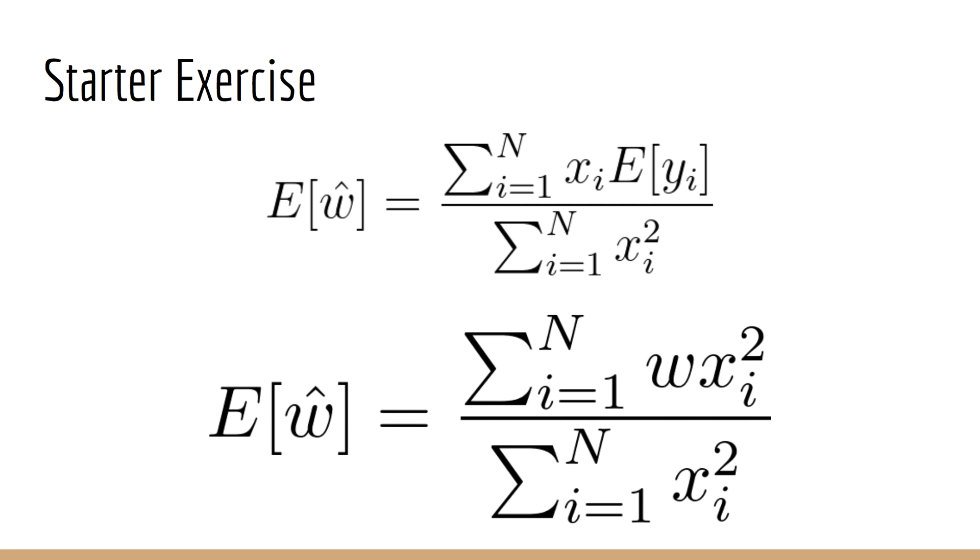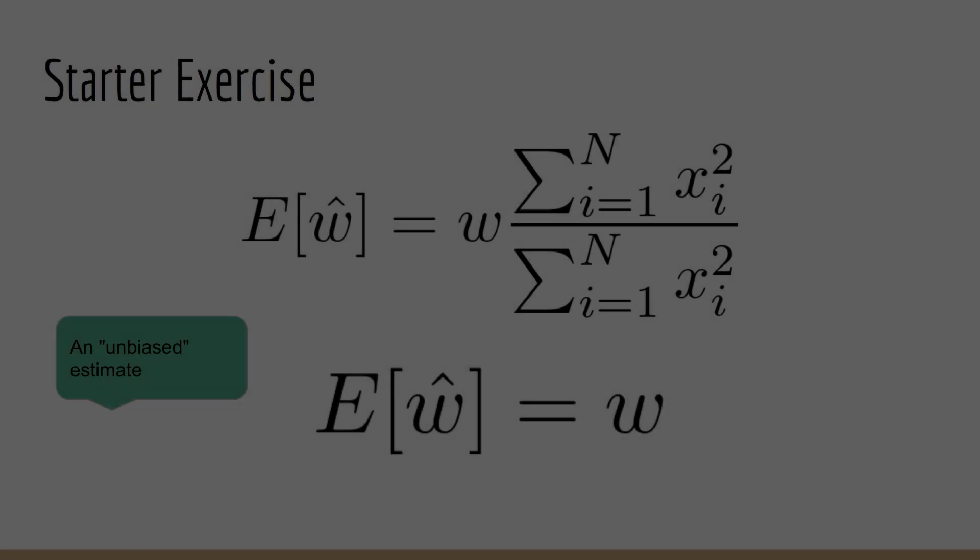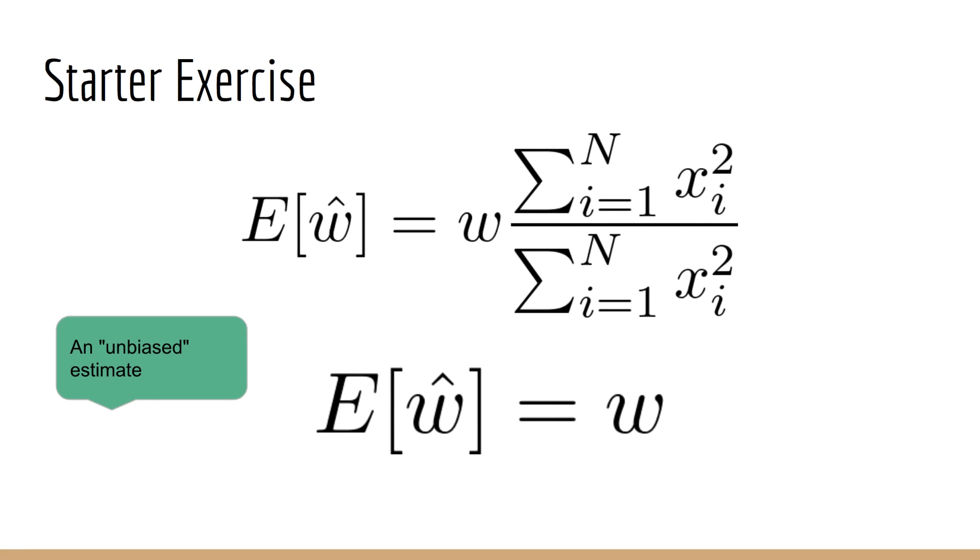If we plug this back in, we get the sum of w times x sub i squared divided by the sum of x sub i squared. Since w doesn't depend on i, we can bring that outside the sum. We can see that we just have the sum of x sub i squared divided by the same thing, and therefore that ratio is 1. And thus, the expected value of w hat is just w, which makes sense.